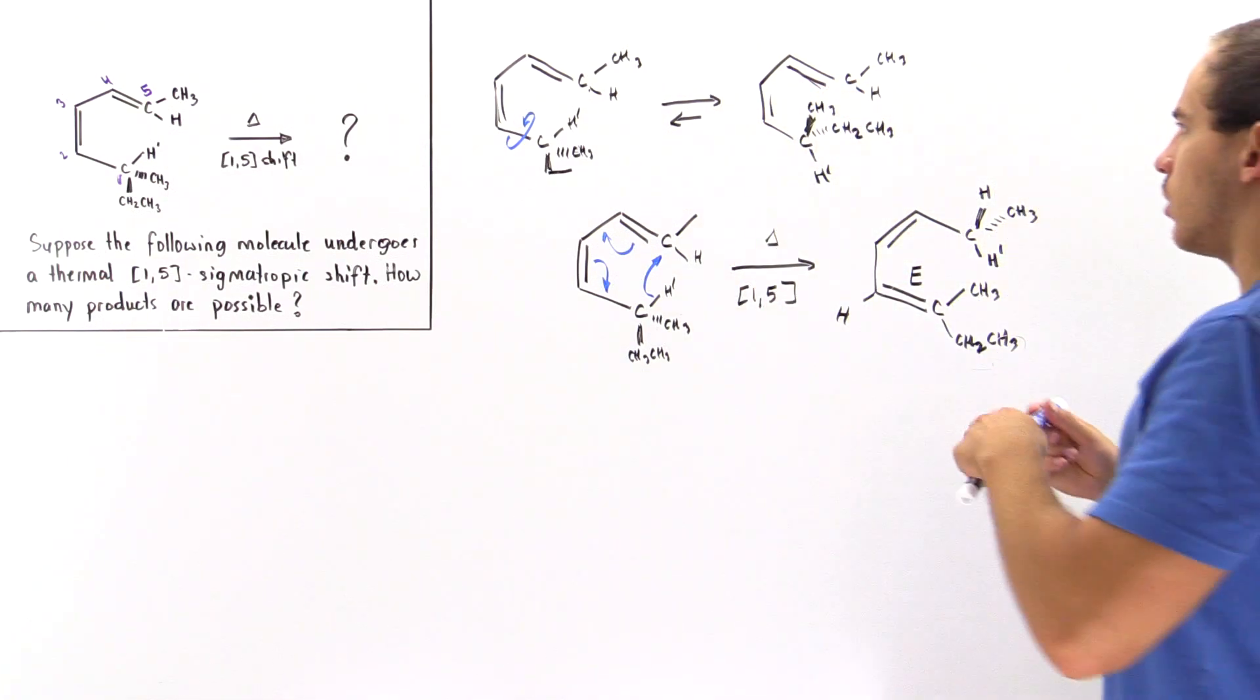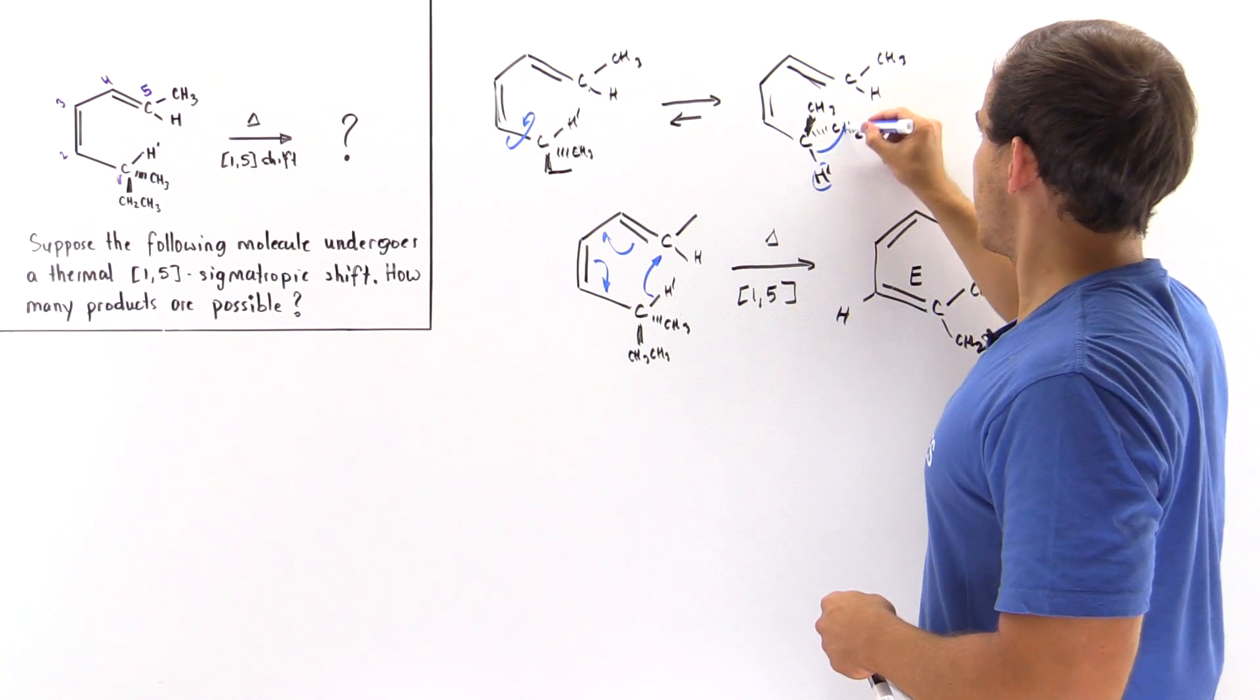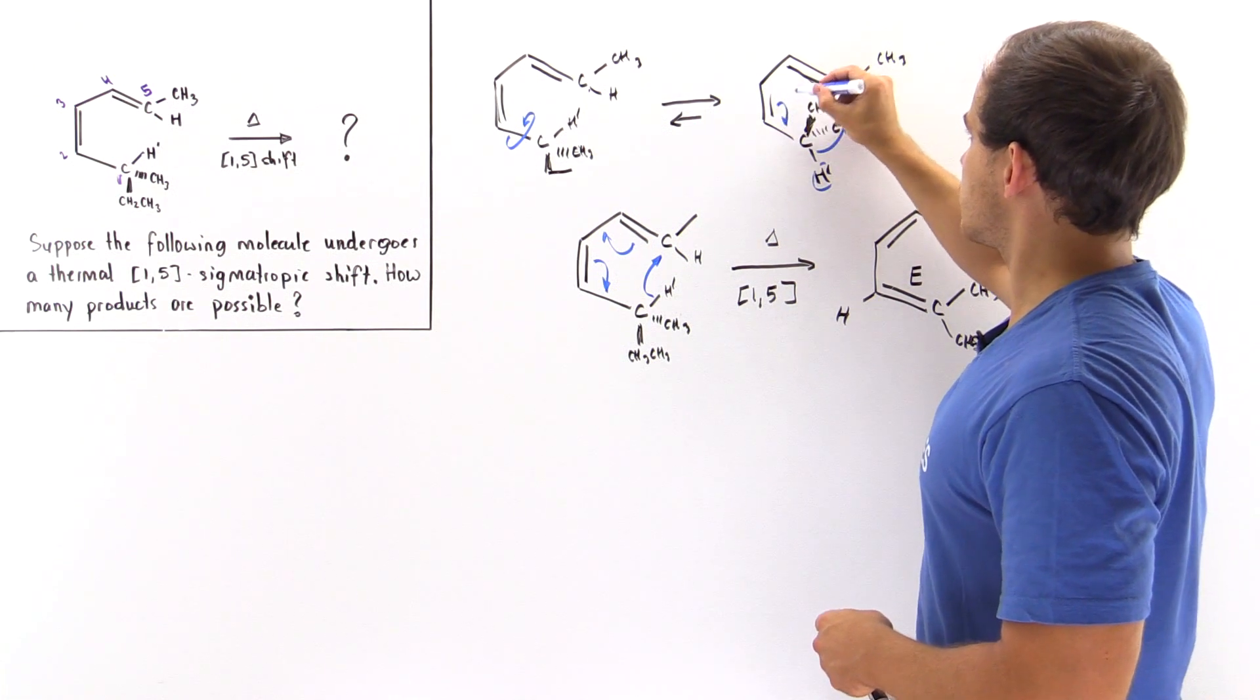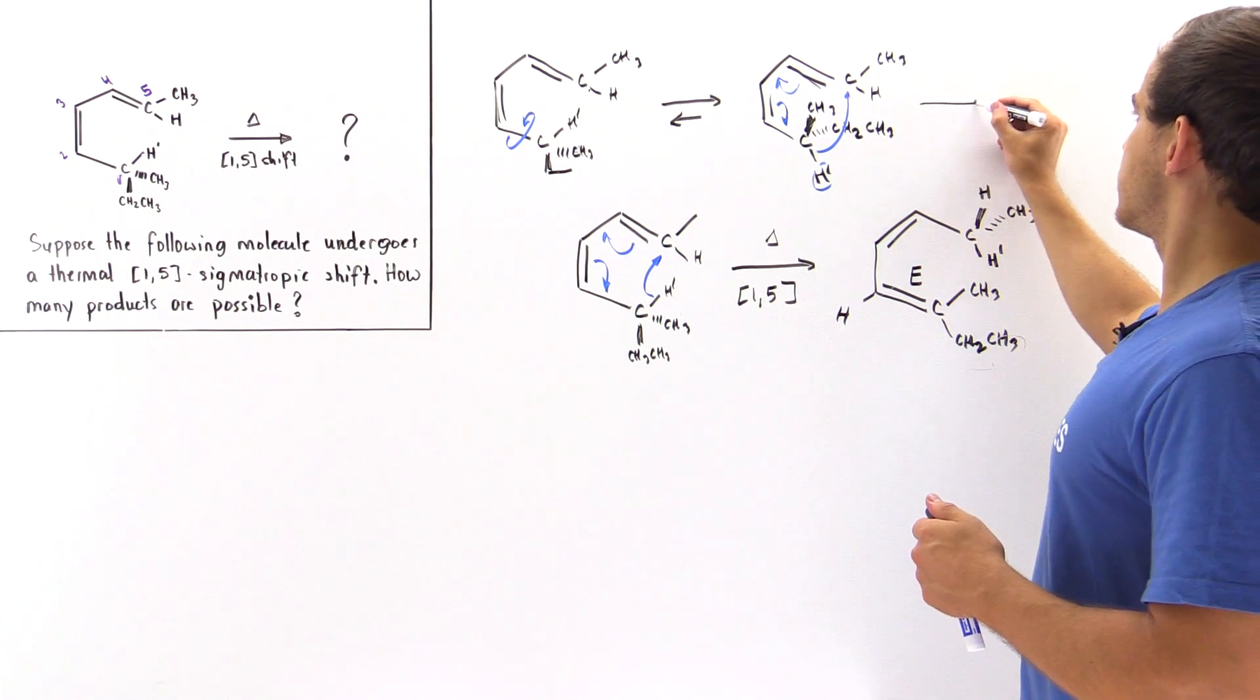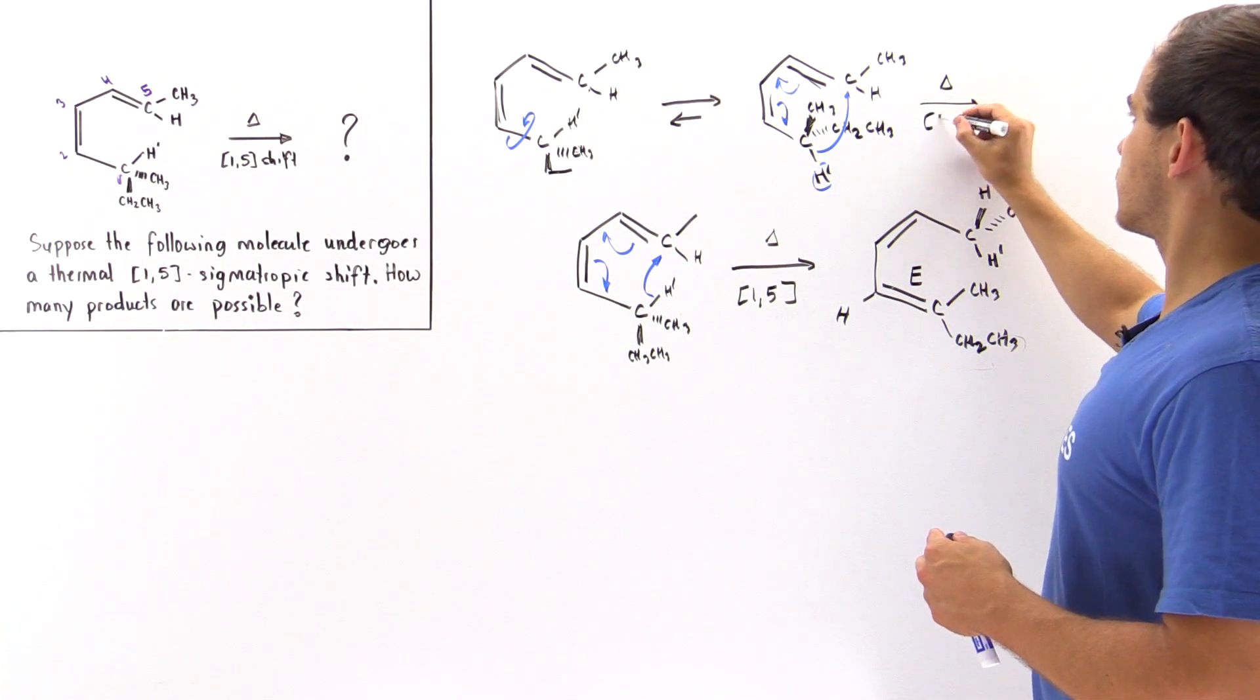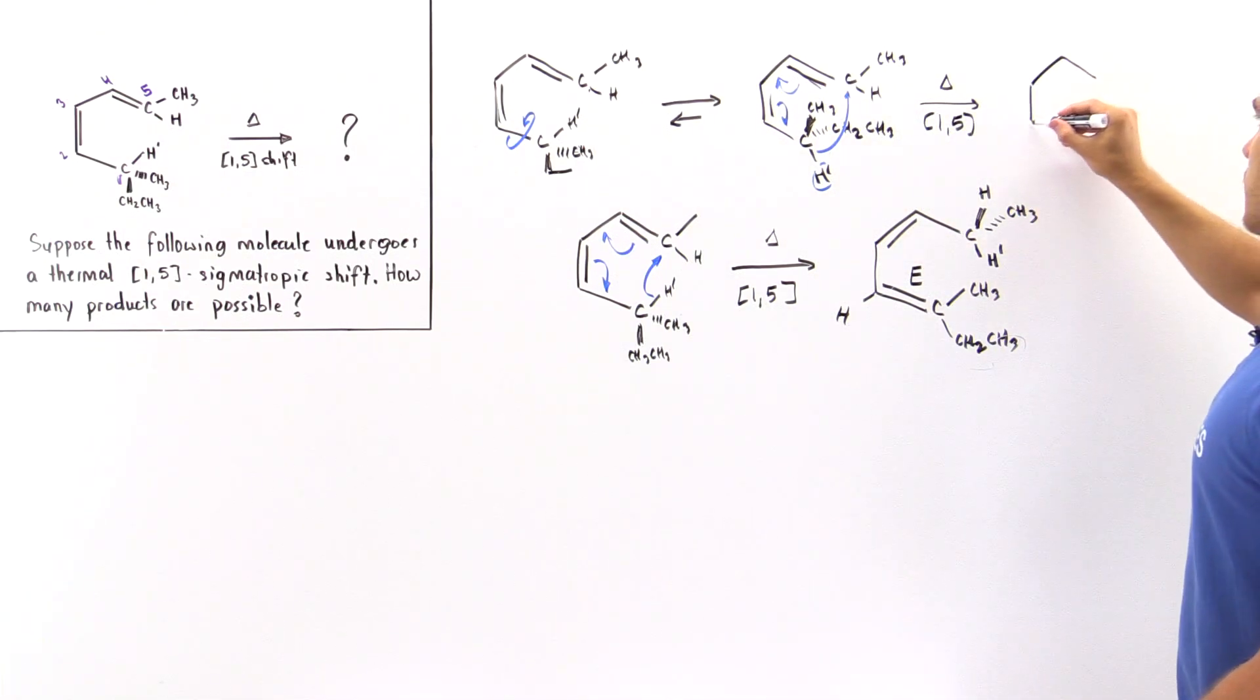And so now in our reaction mechanism, if this migrates onto this side, this goes here, this goes here, the product that is formed in our 1,5 sigmatropic shift under thermal conditions will be a different product. Let's see what the product will be. It will be different from this product at least in a stereochemical sense.